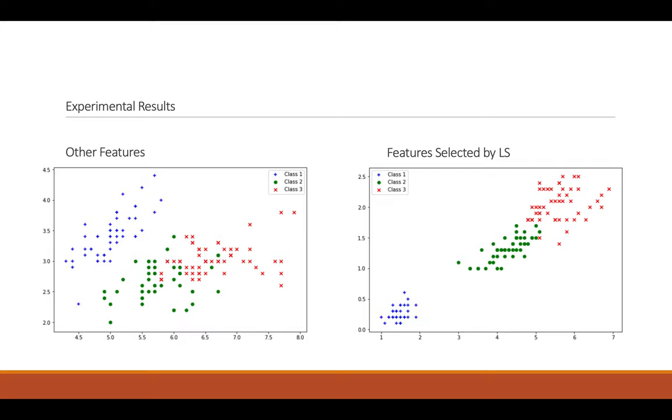And the experiment on the iris data set. As I mentioned before, there are four different features in the iris data set. And by using Laplacian score, the authors select the two most important features. And as you can see, we have a clear clustering result. But when we look at other features, there is no.